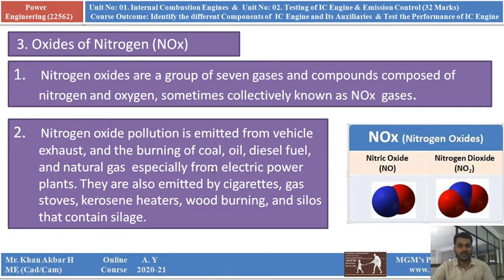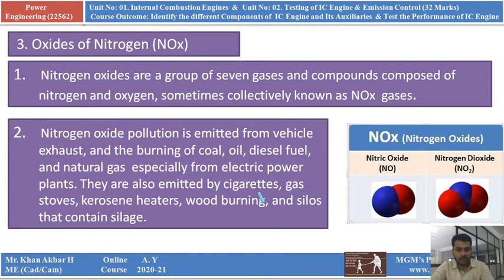Nitrogen oxide pollutants are emitted from vehicle exhaust — that is the first source. Then, burning of coal, oil, diesel fuel, and natural gases, especially from electric power plants, also produces oxides of nitrogen. They are also emitted by cigarettes, gas stores, kerosene heaters, wood burning, and silos that contain silage.